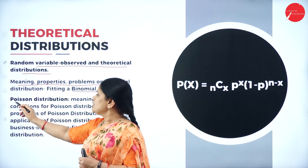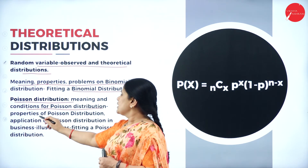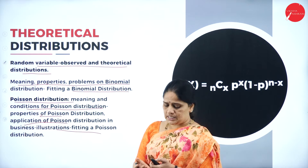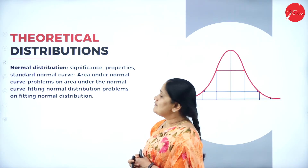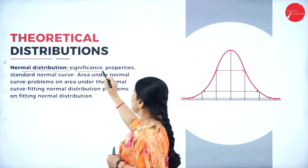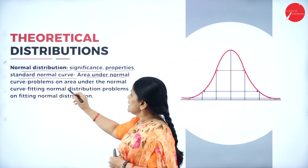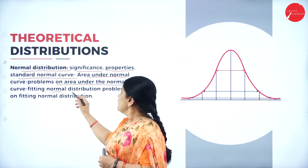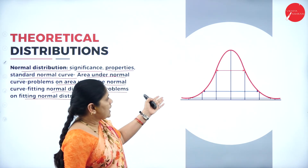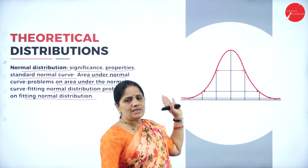We will also be studying about Poisson distribution — its meaning, condition, properties, applications, and illustrations for fitting the Poisson distribution. Then we will also have a study of normal distribution: its significance, properties, the standard normal curve, area under the normal curve, problems on area under the normal curve, fitting the normal curve and fitting the normal distribution.